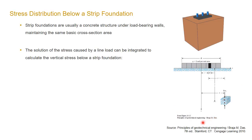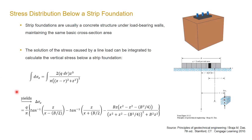We can assume strip footing acts as the accumulation of line loadings. Each tiny strip can be presumed to induce stress as if it is a line load. Therefore, the integration of the line load equation provides us with the equation of stress distribution below the strip footing. Here, q is the load per unit area, x and z are the horizontal and vertical distances of the point from the center of the strip, and b is the width of the strip footing.